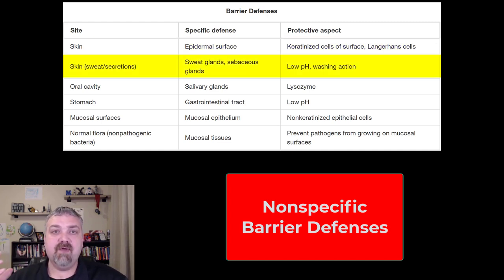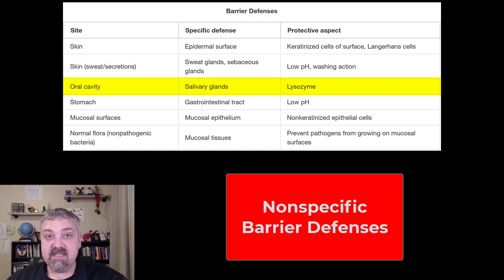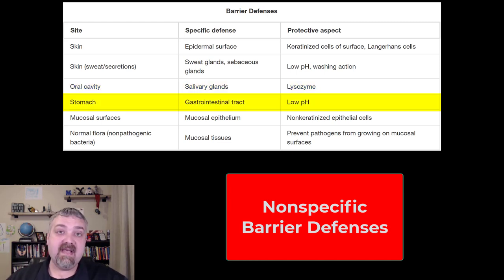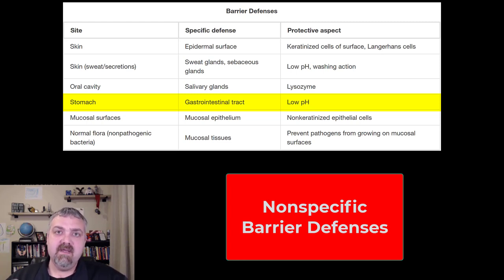We'll talk about sweat and sebaceous glands and the sebum that they produce. Salivary glands are a great example because they produce lysozyme, which is really good at destroying the cell walls of gram-positive bacteria, so your saliva has an immune component to it. The stomach acid is a great one — the stomach pH can get as low as 1, and one of the reasons we have such an acidic stomach is to stop the movement of microbes that are swallowed and keep them from going any farther.